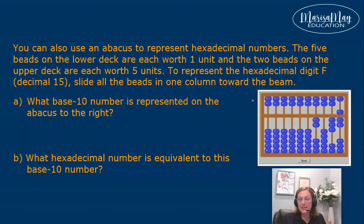So something to know about an abacus is that all of the beads on the top row are worth 5, and all of the beads on the bottom row are worth 1.